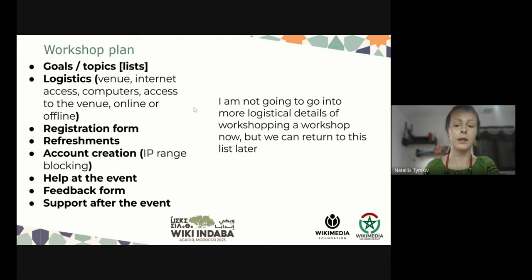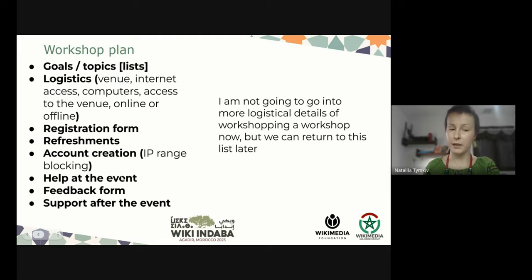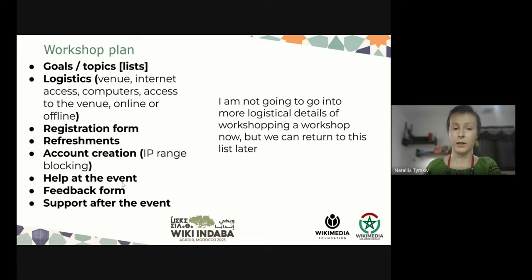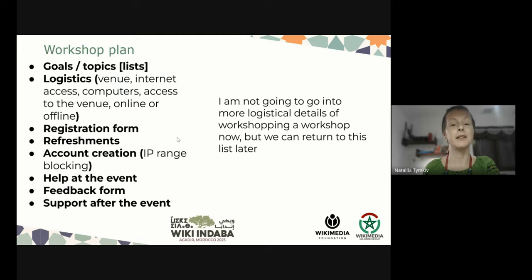Registration is provided by the brand or partners, the venue. Let's talk about account creation and IP range blocking in that component. Output of the event — whether you can request it from your community members, affiliates, or from the partners of the venue. A feedback form in order to understand and keep track of things to improve for the next time. And support after the event — just by conducting a workshop doesn't mean your work is done. You might still find yourself answering questions from people after the event when they actually started using Wikipedia on their own.